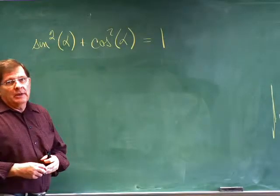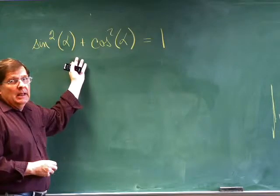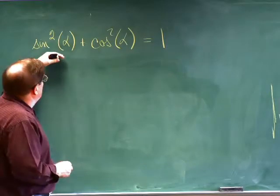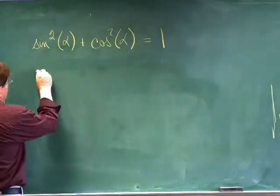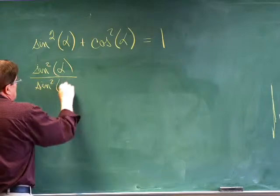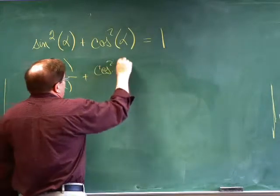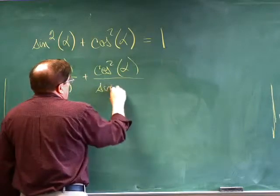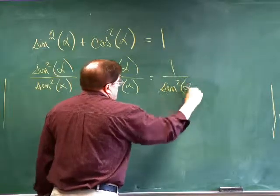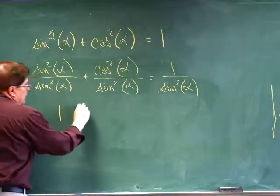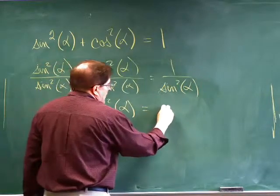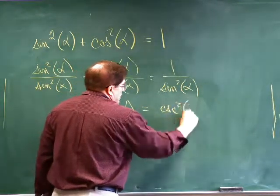There are two other Pythagorean identities that are really equivalent to this one and come from this one directly. Suppose that we divided both sides of this equation by sine squared. Here's another trig identity: sine squared of alpha divided by sine squared of alpha plus cosine squared of alpha divided by sine squared of alpha. And what we get here is 1 plus cotangent squared of alpha and cosecant squared of alpha. So that's our second Pythagorean trig identity.